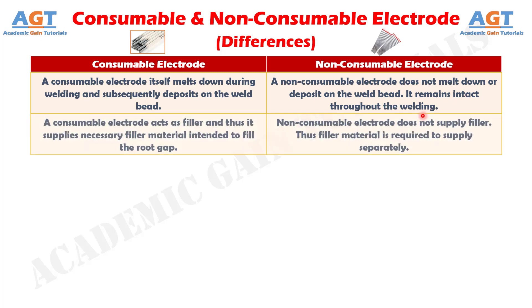Number 2: A consumable electrode acts as filler and thus it supplies necessary filler material intended to fill the root gap, whereas a non-consumable electrode does not supply filler. Thus filler material is required to supply separately.